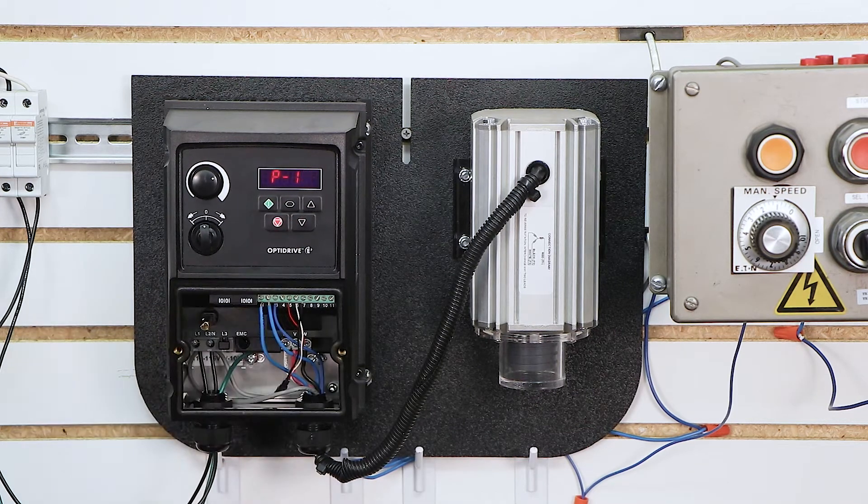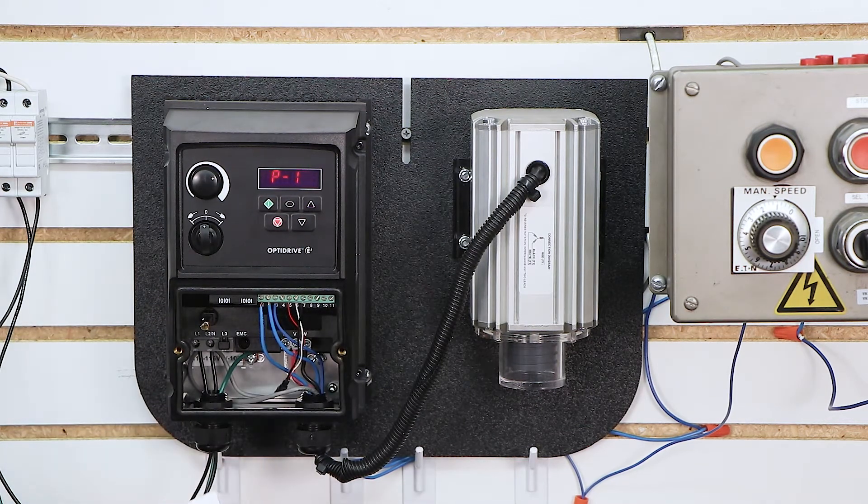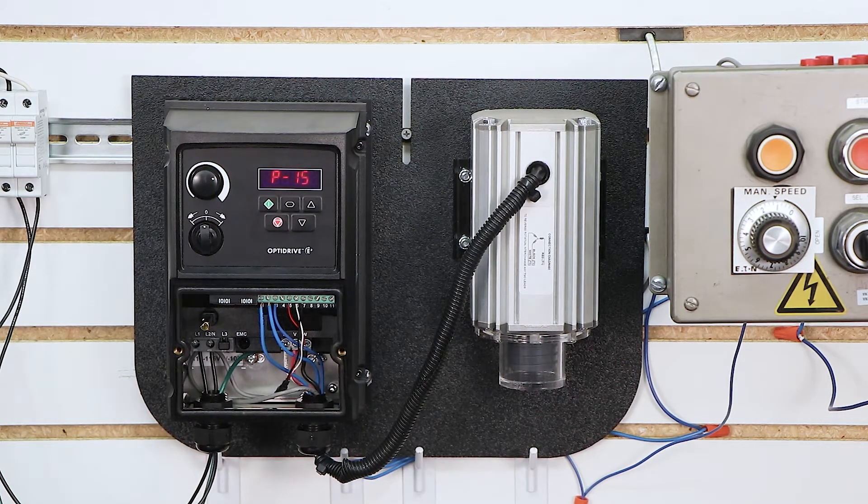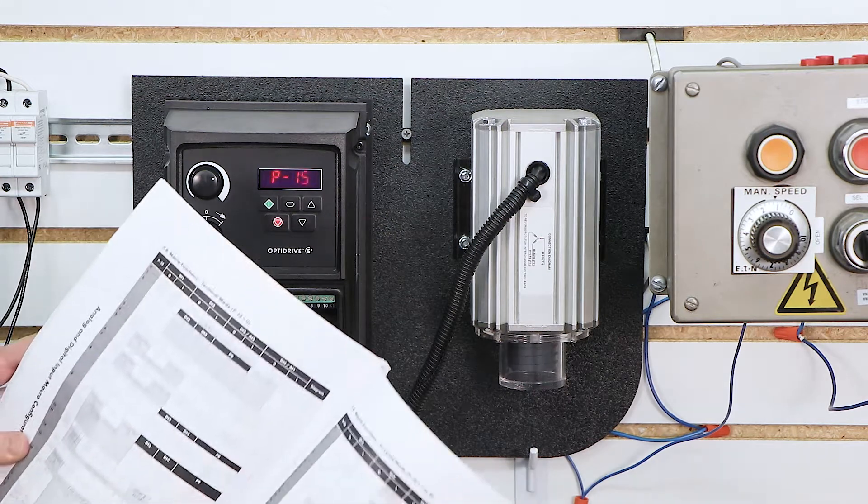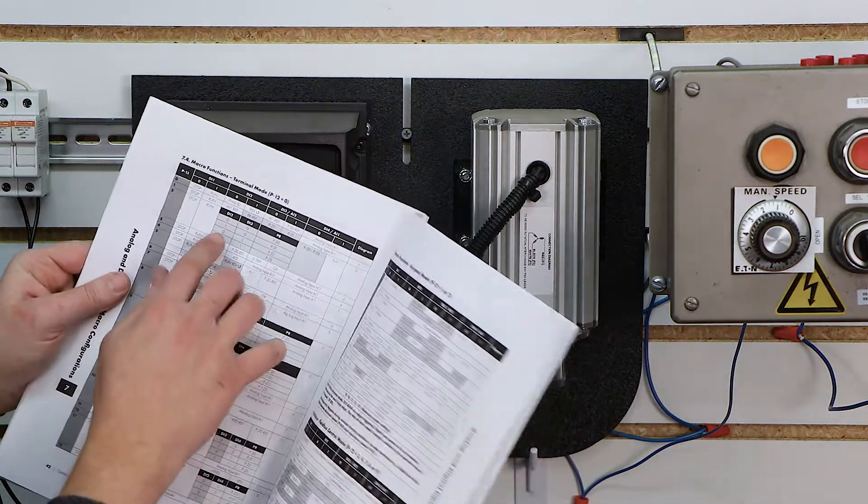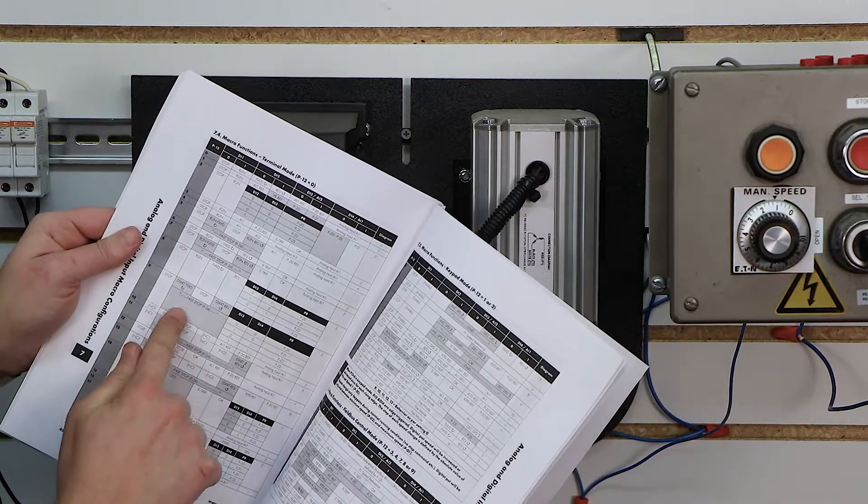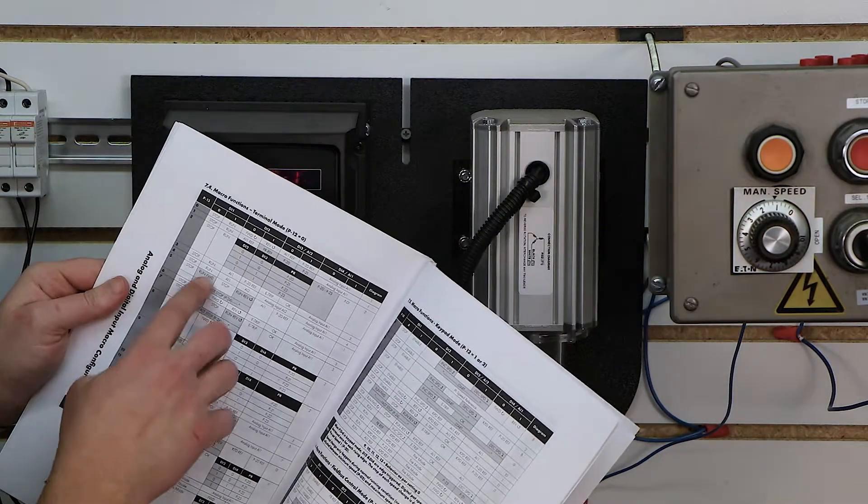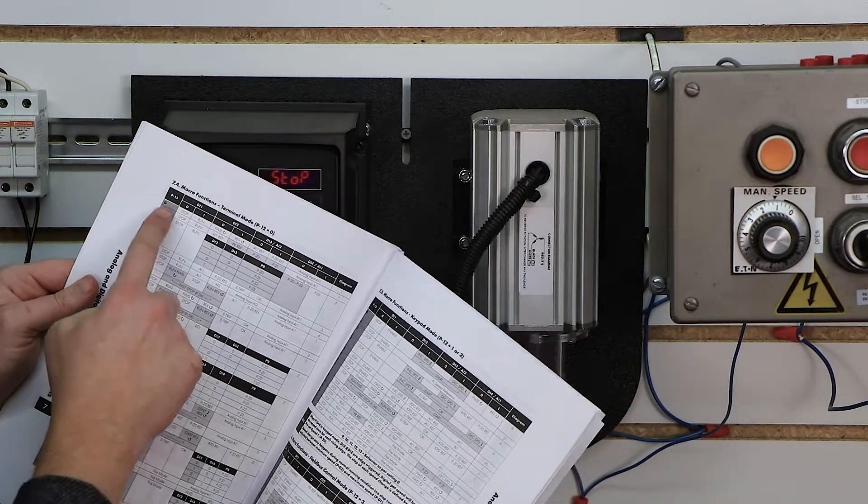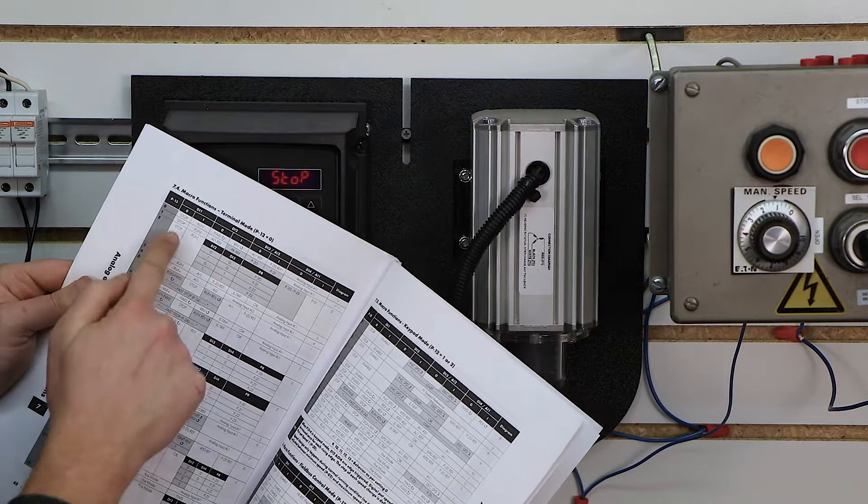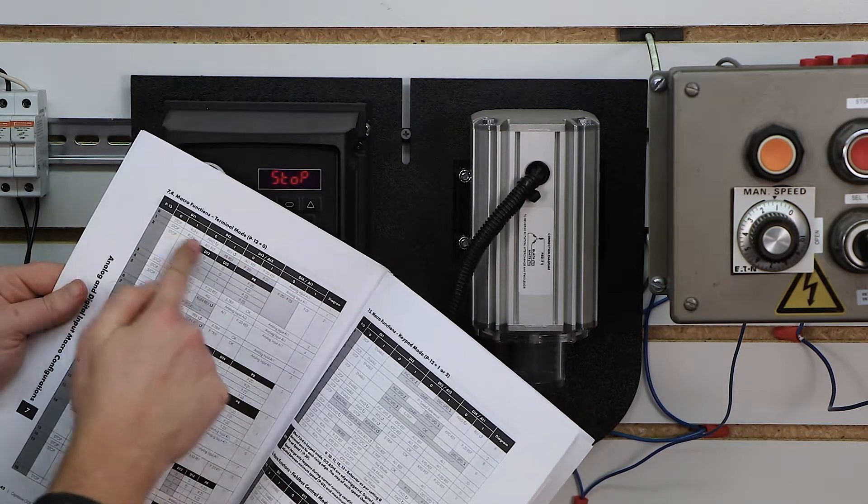And we're going to go backward one parameter to P15 next. P15 is actually our application macro. That particular parameter is a little more confusing, because as you can see, you've got a whole lot of macros to choose from. This is on page 42 of the manual. We discussed it in the previous video as well.